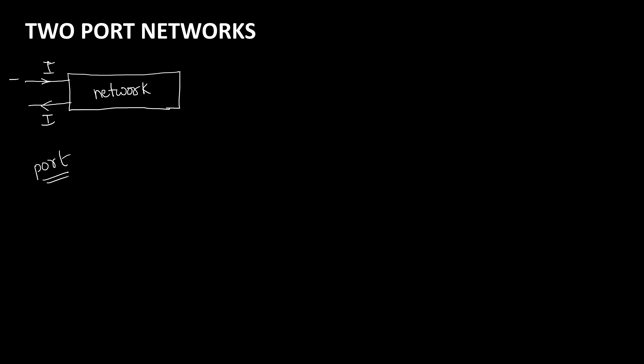Let us have a pair of terminals here at which current is entering and leaving. This is called a port, and we can have the voltage across these particular terminals as V. So how many terminals are there? One pair — that is why this is called a one-port network.